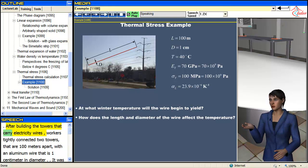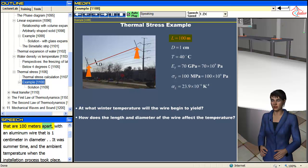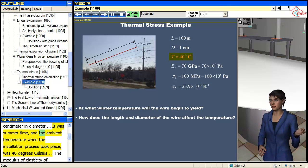After building the towers that carry electricity, workers tightly connected to towers that are 100 meters apart with an aluminum wire that is 1 centimeter in diameter. It was summer time, and the ambient temperature when the installation process took place was 40 degrees Celsius.